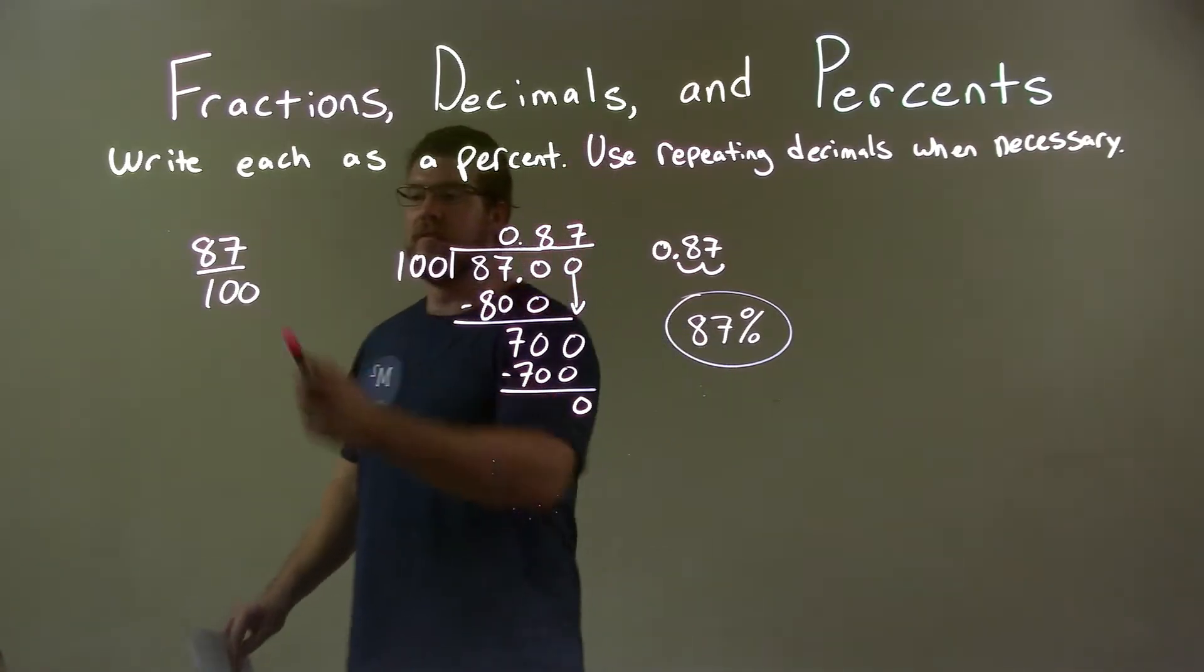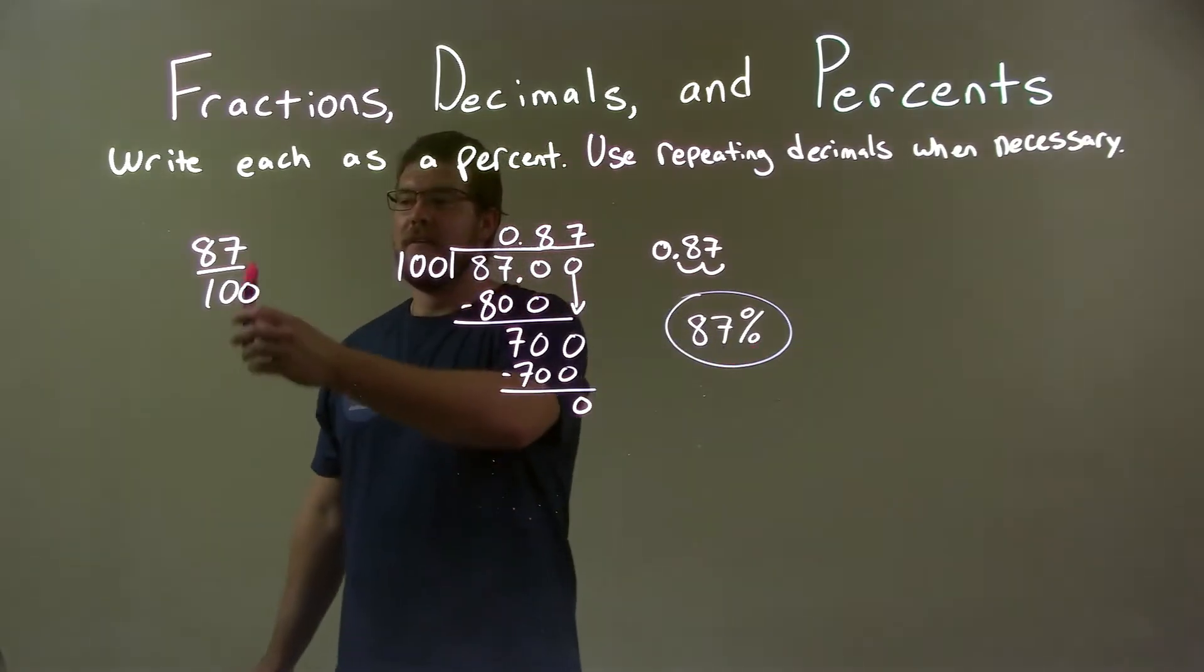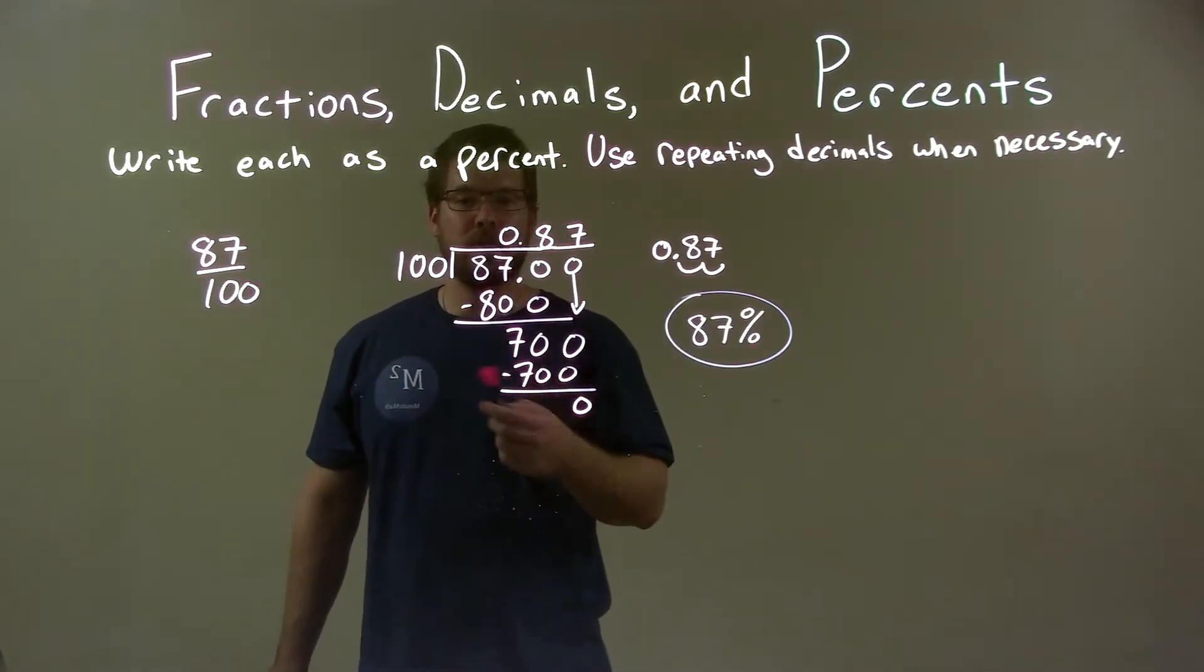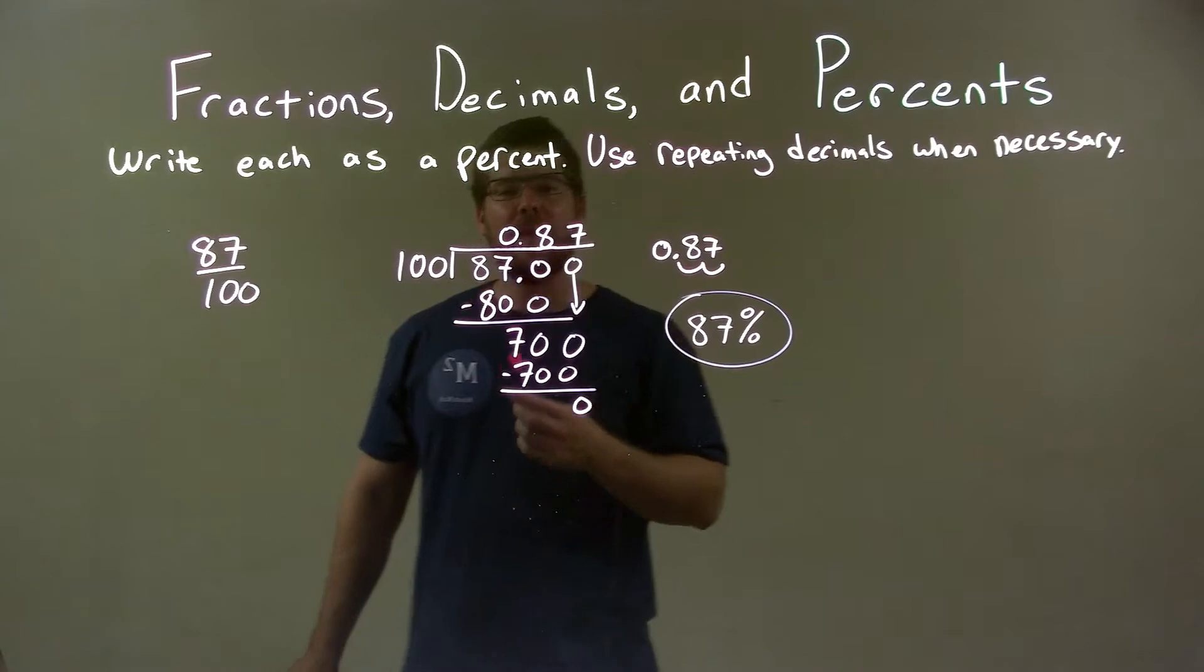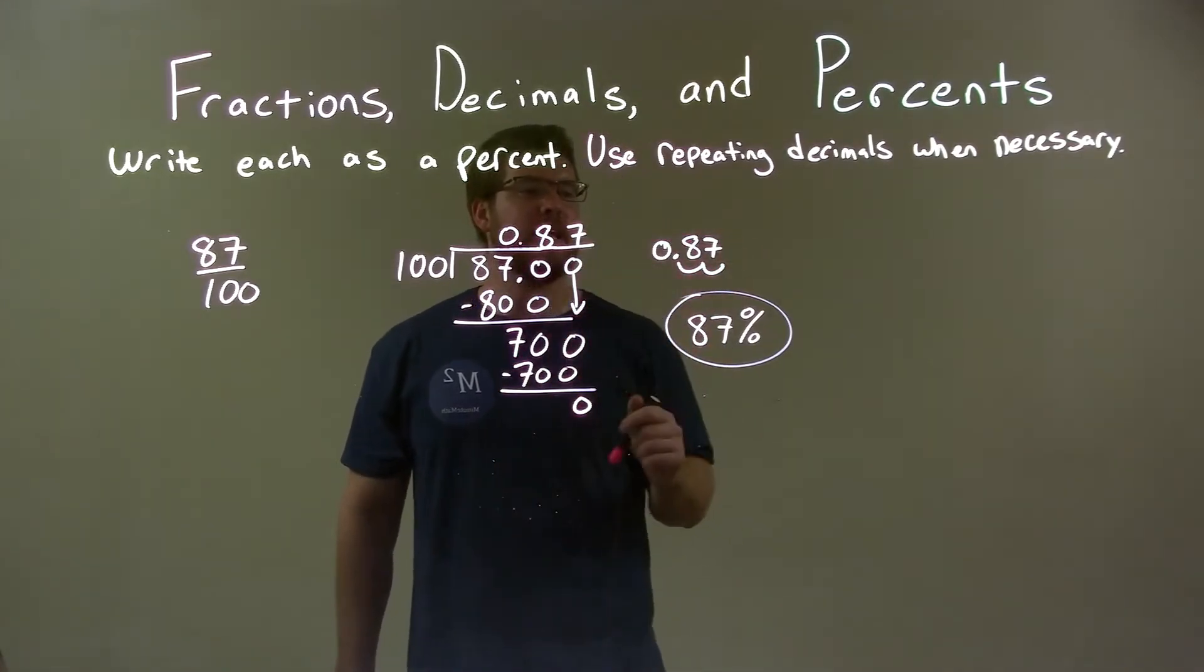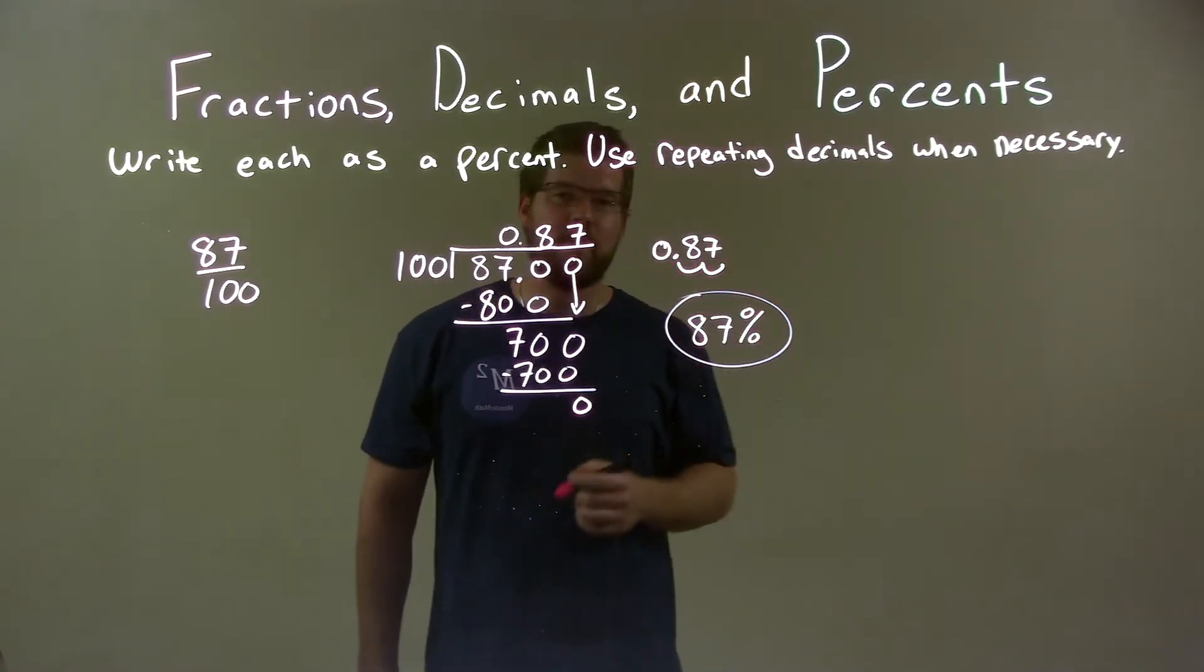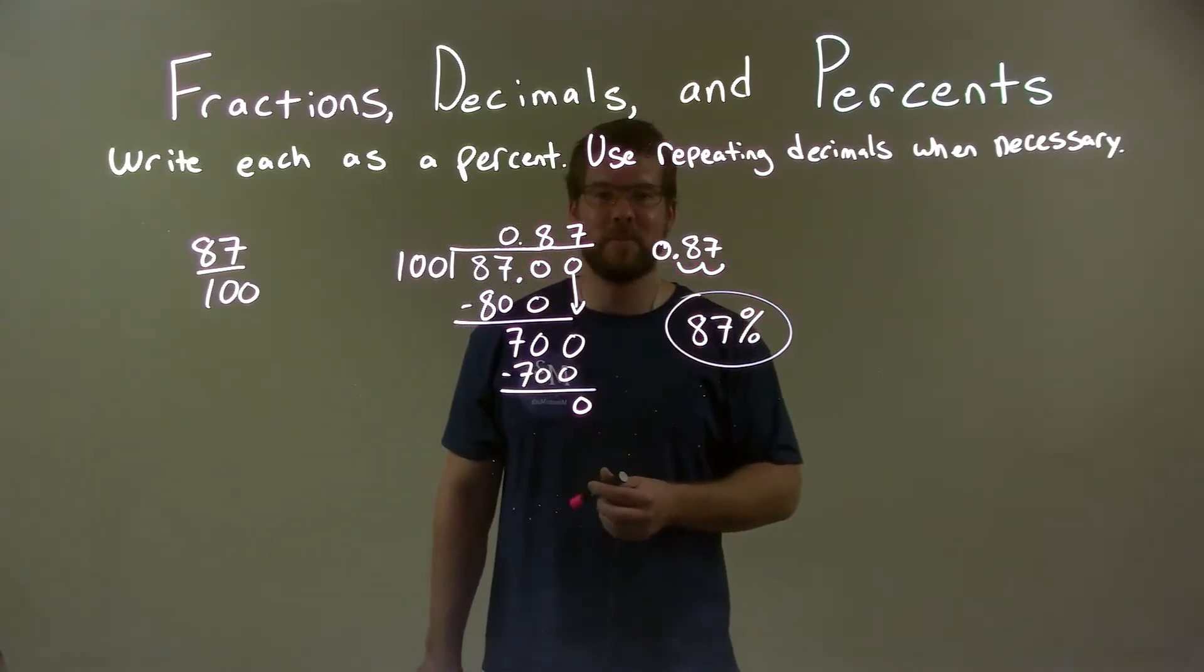So quick recap. We're given 87 over 100 and we have to write that as a percent. Well, I have 87 to 100. I write that with long division, 100 into 87, and that gave me 0.87. Then from there, I converted 0.87 to a percent by moving the decimal two spots to the right, which gives me my final answer of 87 percent.